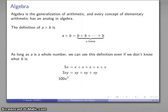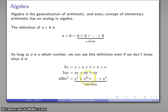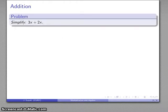And 100x squared, that's the sum of x squared plus itself 100 times. I'm not going to write that out, but I have a whole bunch of these x squareds added together. And if you understand that, then a lot of those basic rules of algebra are pretty obvious.